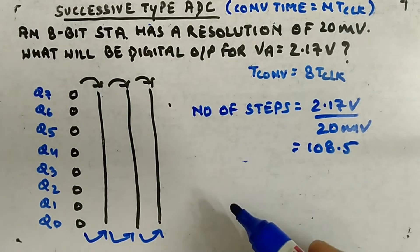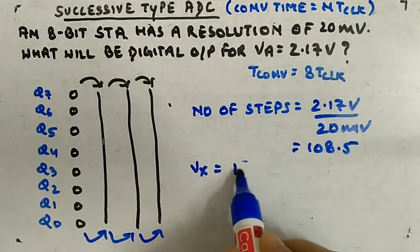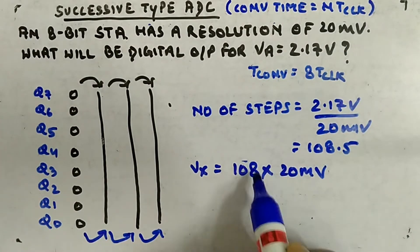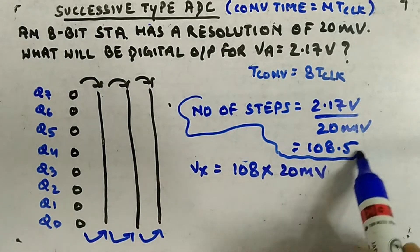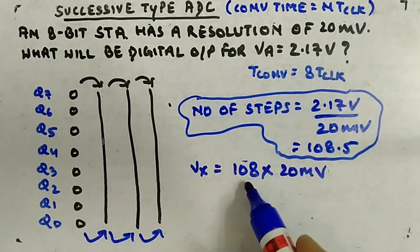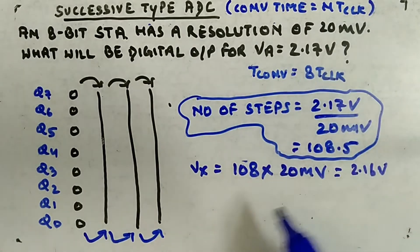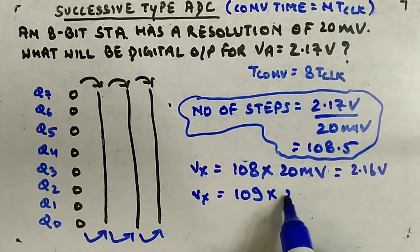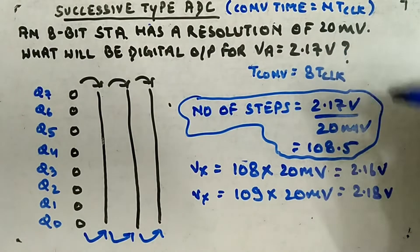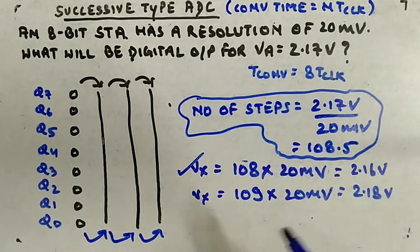Now check VX for decimal equivalent 108: that gives 108 times 20 millivolt, which is 2.16 volt. Then check VX for 109: that gives 109 times 20 millivolt, which is 2.18 volt. The input 2.17 volt lies between these two values, so the successive approximation converter will always choose the lower one — equal to or lower.